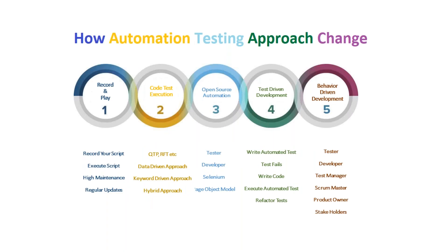Now let's move to the BDD approach. At a very high level, I want to explain how the automation testing approach changed from Phase 1 to Phase 5. In around the year 2002–2004, the first phase was Record and Play, also known as basic automation — a way to run your tests without programming knowledge.